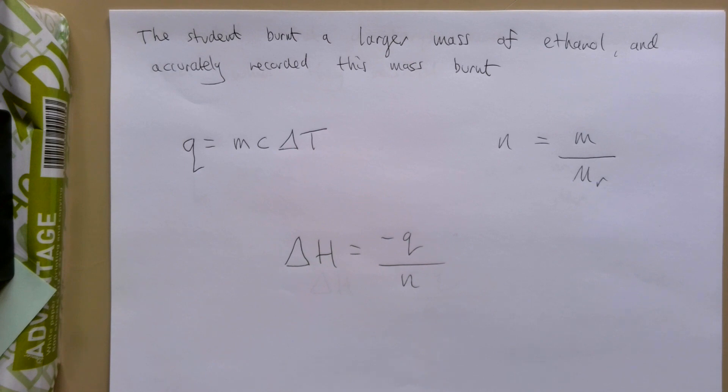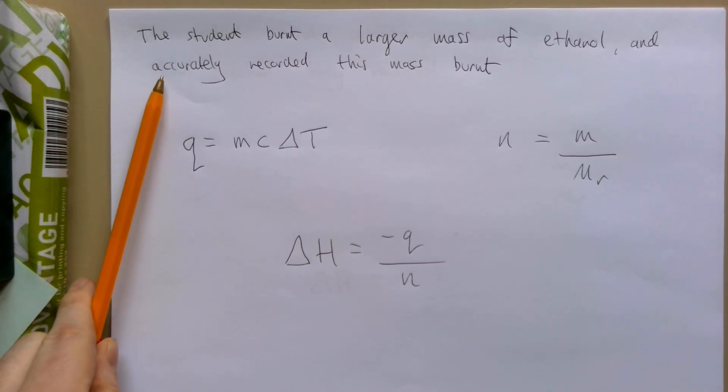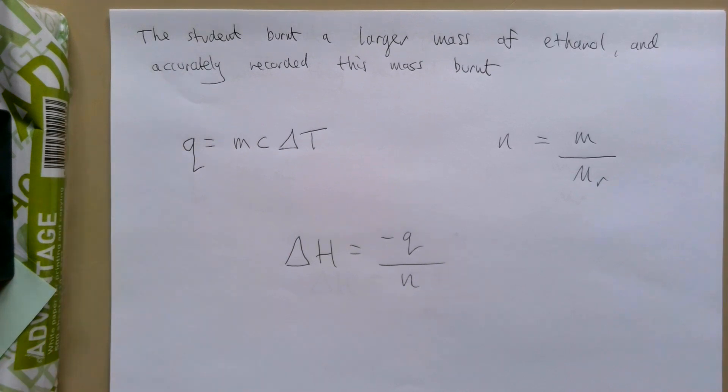Let's imagine now that a student performed that method exactly as it says on the document, only this student burnt a larger mass of ethanol and they accurately recorded that larger mass burnt. What we're going to try and figure out is what effect this will have on the calculated enthalpy change.